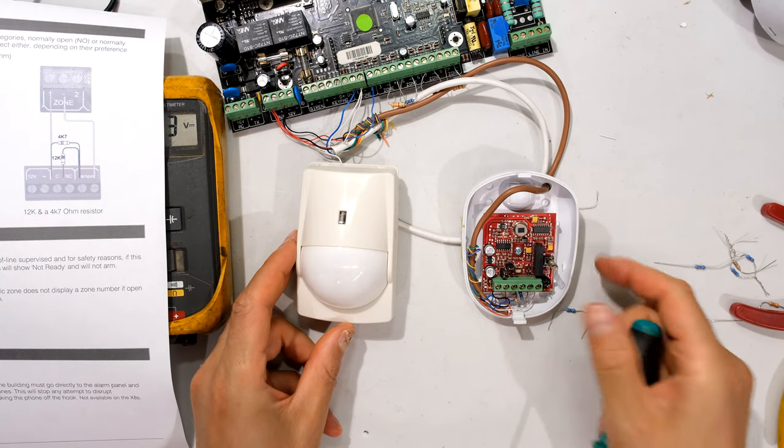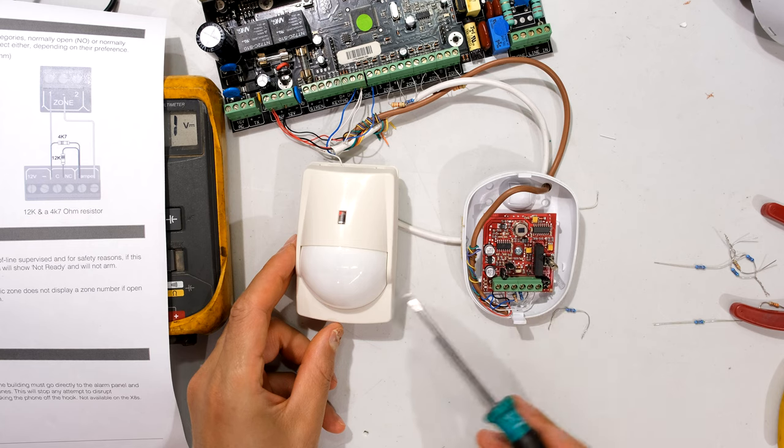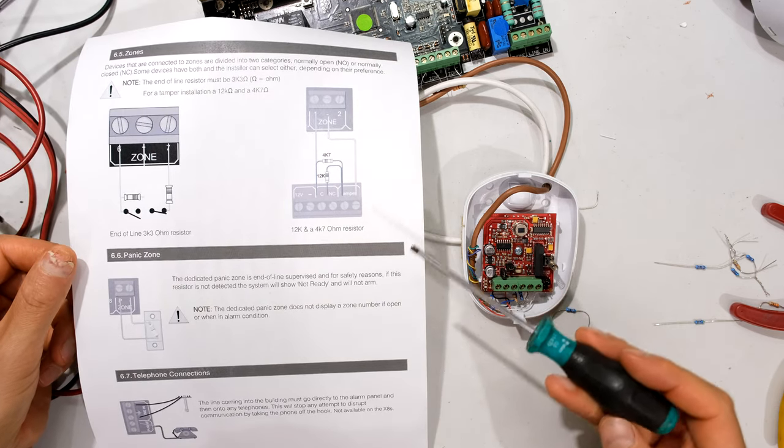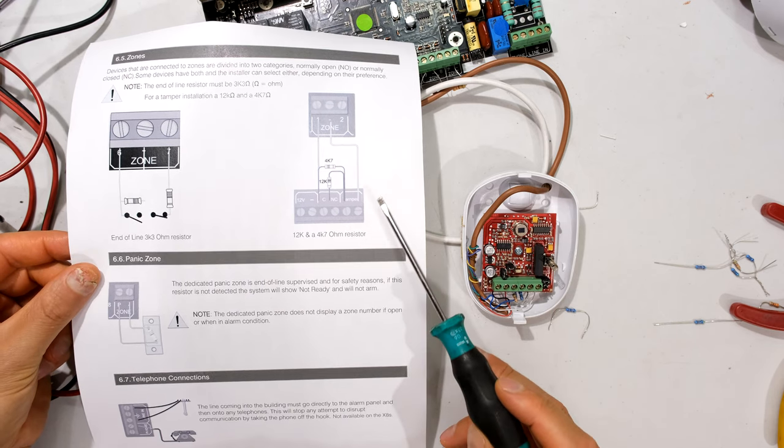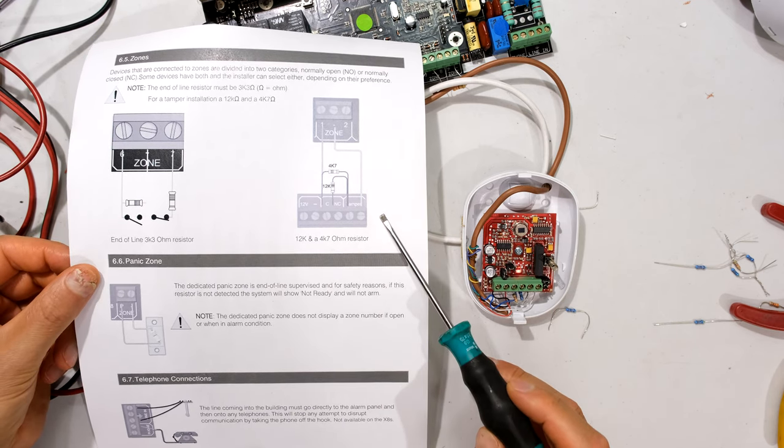Hi, in this video I'm going to be demonstrating how to connect your passive infrared sensors with a tamper function. Now I'm going to be using the X64 by IDS and this is the general layout that you need to follow.